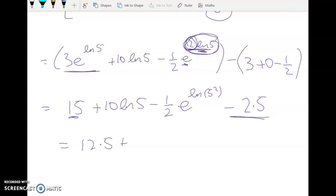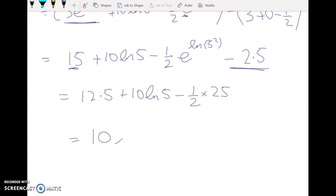So 12.5 plus 10 log 5 minus a half of 25, which is 12 and a half. So my final answer that I got was simply 10 log 5.